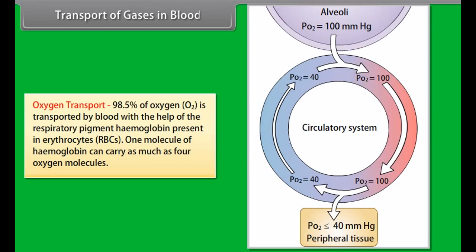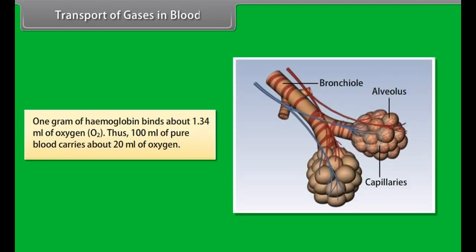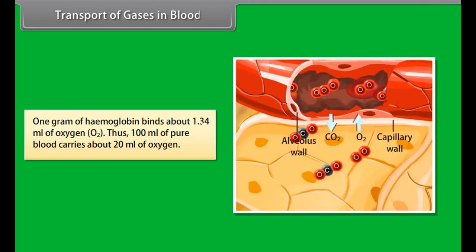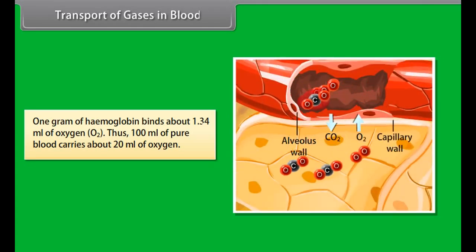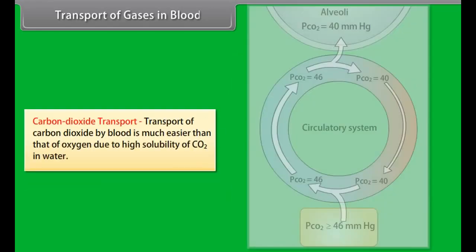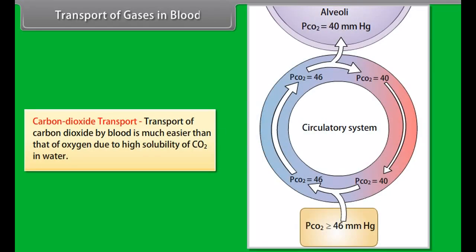In humans, the right lung has three lobes and the left lung has two lobes. The diaphragm is a dome-shaped muscular structure separating the thoracic and abdominal cavities. It is characteristic of mammals and is supplied by the phrenic nerves. Puncturing of the diaphragm results in stoppage of breathing and is fatal.